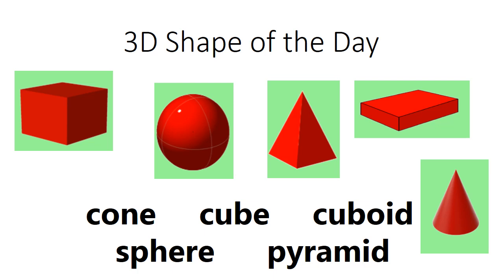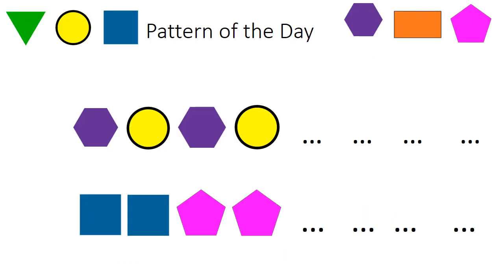For our patterns, you can use different shapes to create different patterns and they should be repeating. Can they continue this pattern? A lot of the time in Room 9 class we will use actions to go along with these. For example, for our hexagon circle pattern I might tap my legs for hexagon and clap my hands for circle. So let's have a go: hexagon, circle, hexagon, circle, hexagon, circle, hexagon, circle.